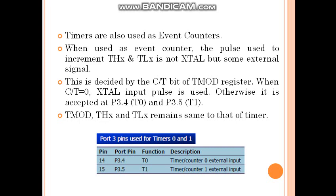Timers are also used as event counters, which we already discussed. When used as an event counter, the pulse used to increment THX and TLX is not from XTL but from some external signals. This is decided by the counter/timer select bit C/T in the timer mode register. When C/T equals zero, the XTL input is used; otherwise the external signal is accepted at P3.4, that is T0 and T1. TMOD, THX, and TLX remain the same for that particular timer.